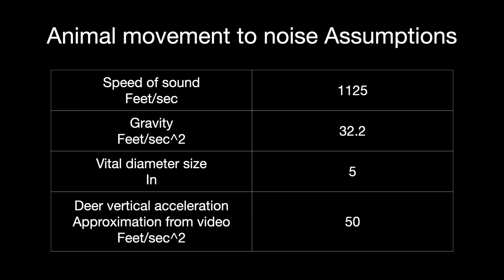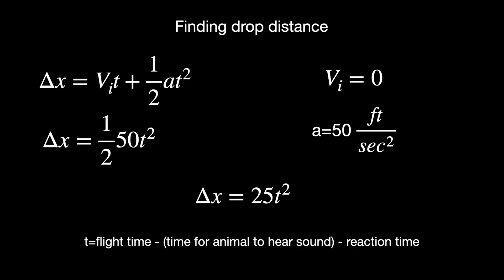We need to understand that the speed of sound in this case we're going to assume is 1,125 feet per second. We're giving a vital diameter of five inches as our intended aiming location — that'll be important for the figures illustrating animal movement coming up. From this, we can use a kinematic equation for a rough estimation of how much distance the animal can cover in a given time: one half the acceleration times the time squared equals our change in distance.